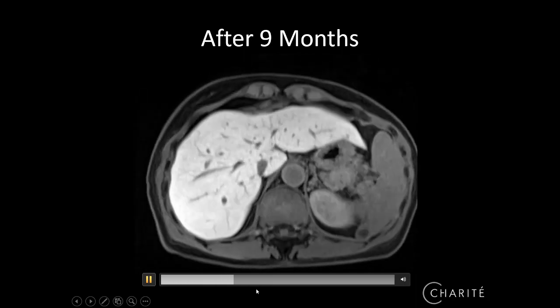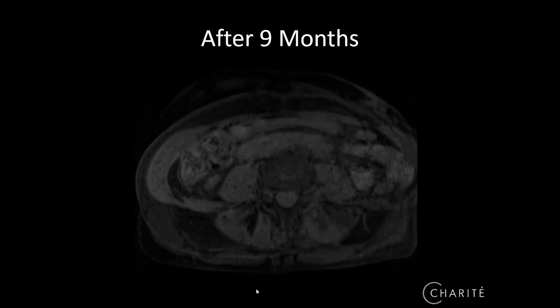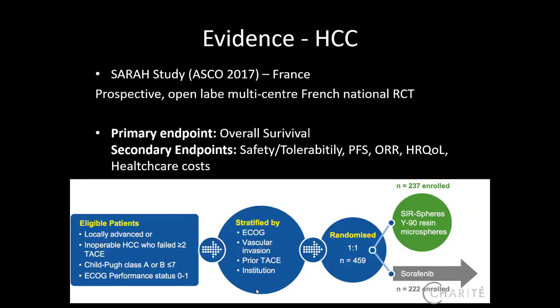Let us come to the evidence. This year at ASCO in Chicago, a number of abstracts from randomized trials on radioembolization were presented. The first is the SARA study from France — a prospective, open-label, multicentre, French national randomized controlled trial. Patients were stratified into two groups: one received SIRT microspheres and the other received the classic sorafenib. Primary endpoints were overall survival, safety, and others. They used a sequential lobe-treatment approach, treating the larger or more affected lobe first, with the second treatment after 30 days.